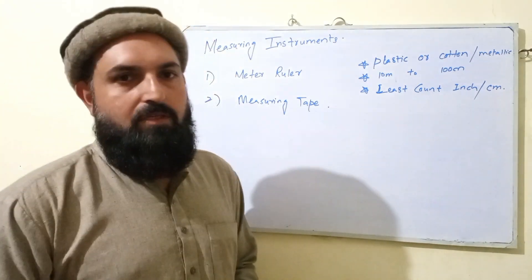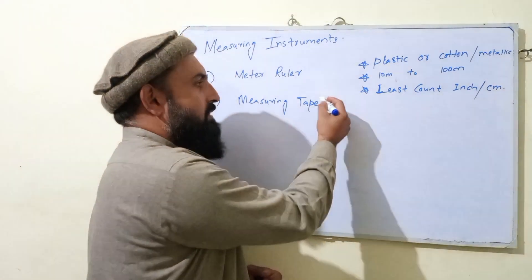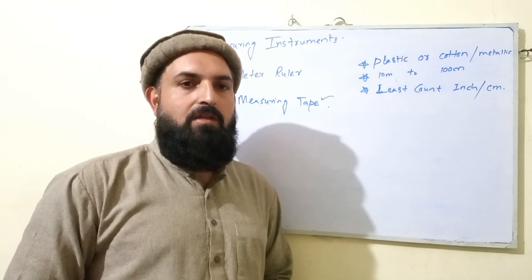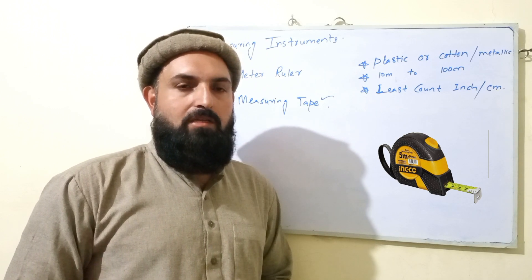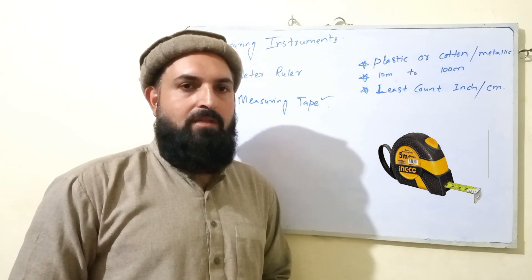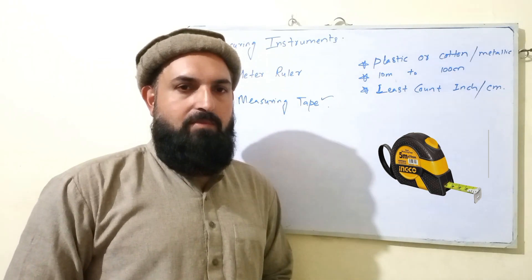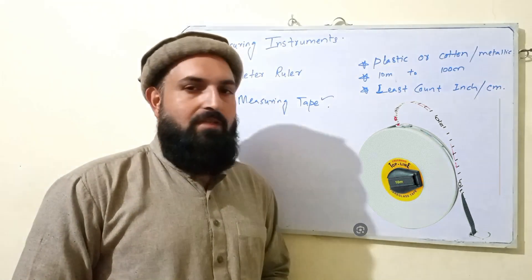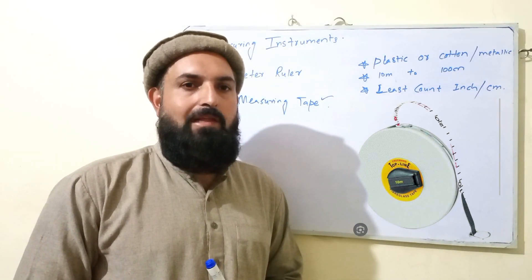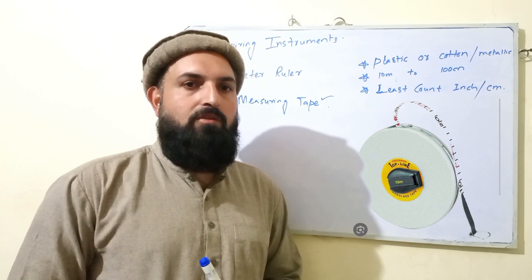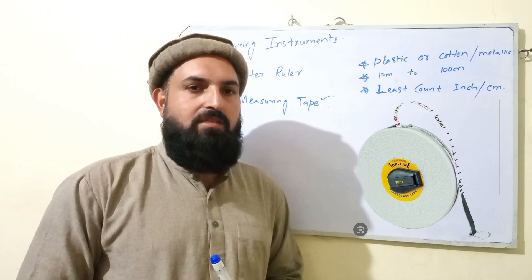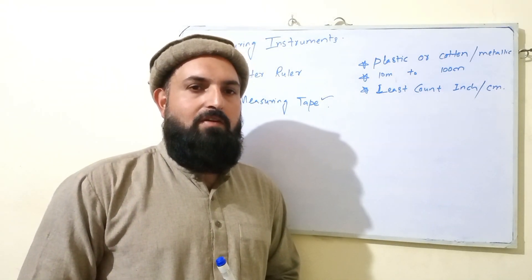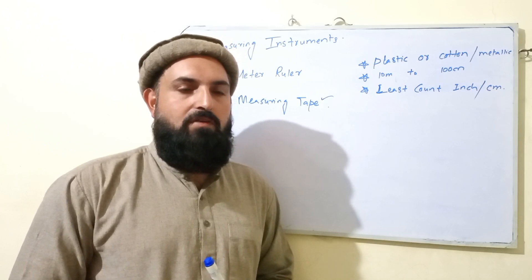The second instrument is the measuring tape, also called a ring tape. Engineers in civil engineering fields use it. The measuring tape is bigger than 10 meters, and they come in different lengths from 10 meters to 100 meters. We can measure large lengths with it. It is also made with plastic, cotton, or metallic material.